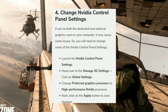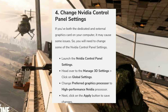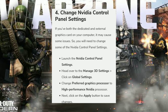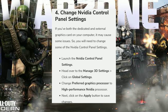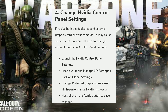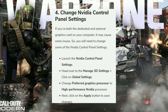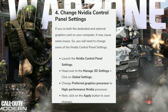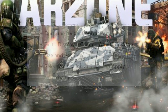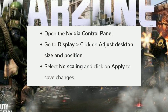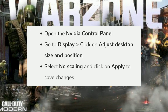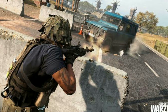The fourth fix is to change the Nvidia Control Panel settings. If you have both a dedicated and an external graphics card on your computer, it may cause issues. Launch the Nvidia Control Panel, go to Manage 3D Settings, click on Global Settings, and change the preferred graphics processor to 'High Performance Nvidia Processor', then click Apply. You can also fix issues by adjusting desktop size and position — open Nvidia Control Panel, go to Display, click 'Adjust Desktop Size and Position', select 'No Scaling', and click Apply.